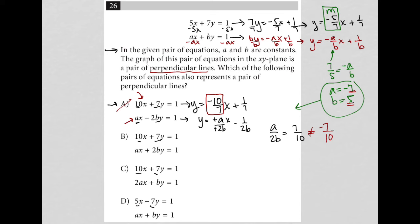Choice B is going to give me the exact same slope-intercept form, Y equals negative 10 over 7X plus 1 over 7. But for the second equation, the sign has been flipped from negative to positive, giving me Y equals negative A over 2BX plus 1 over 2B. Now I'm asking, is it true that negative A over 2B equals positive 7 over 10? That is going to be true. Negative A equals negative negative 7, and 2B equals 2 times 5, and that is in fact 7 over 10. So the correct answer here is choice B.